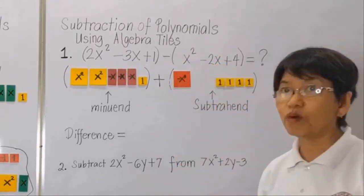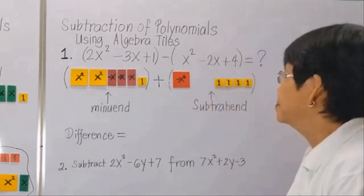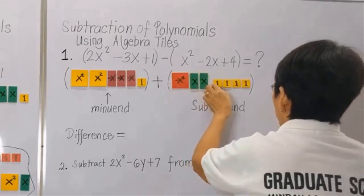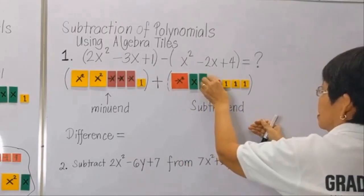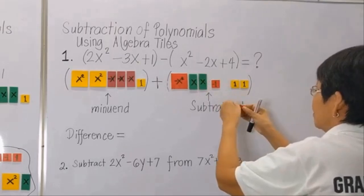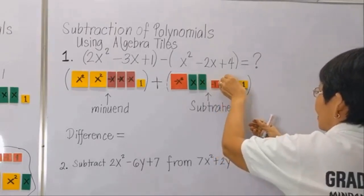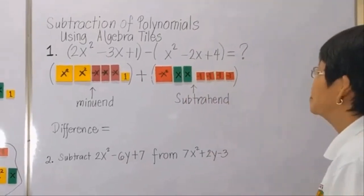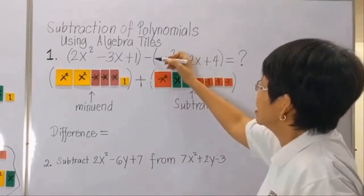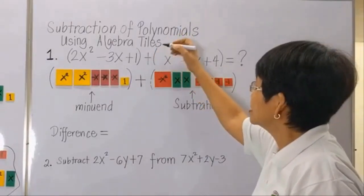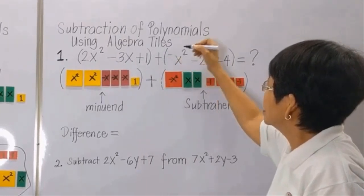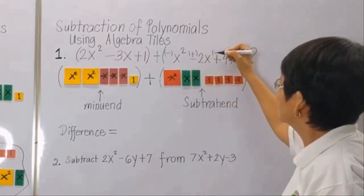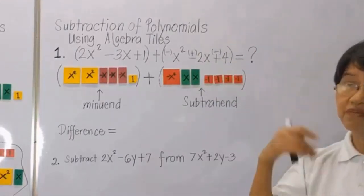And then the two negative x's will also be changed to positive. All these positive ones will become negative. So you simply change the sign — this becomes negative, positive, and negative. The signs above are the prevailing signs. Now we proceed to addition.